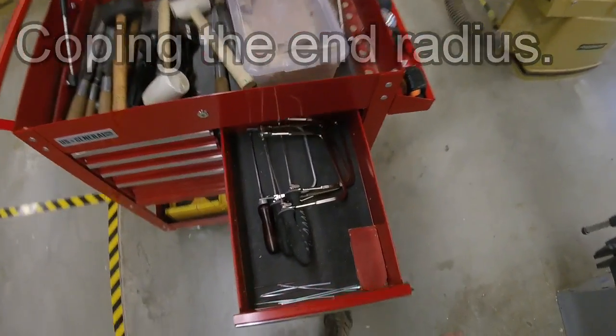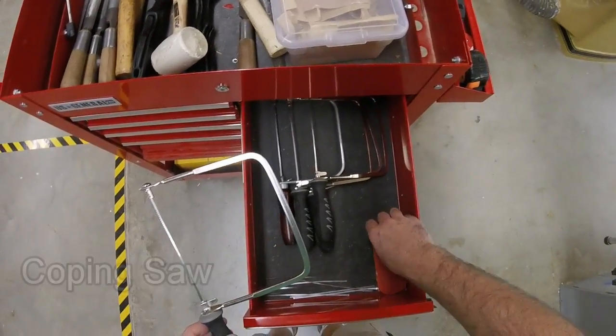The next step is coping the radiused end. To do that, you'll need a coping saw and a pattern.